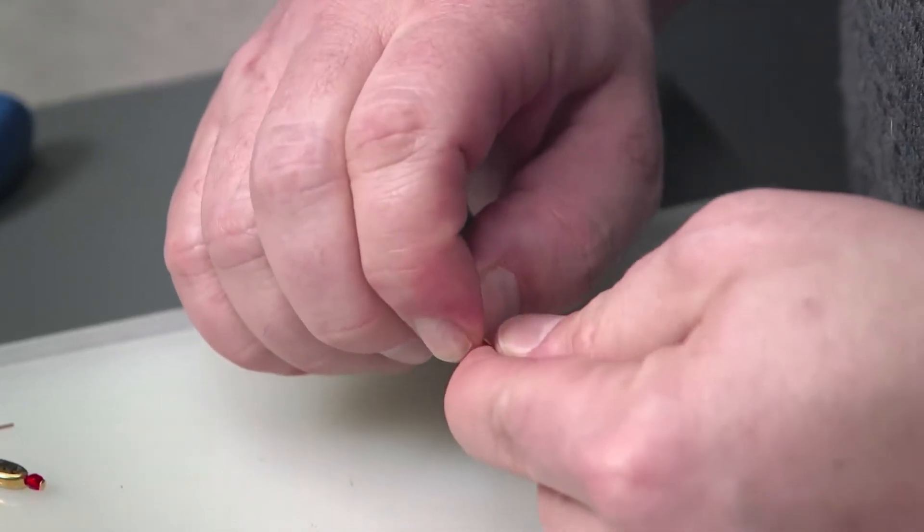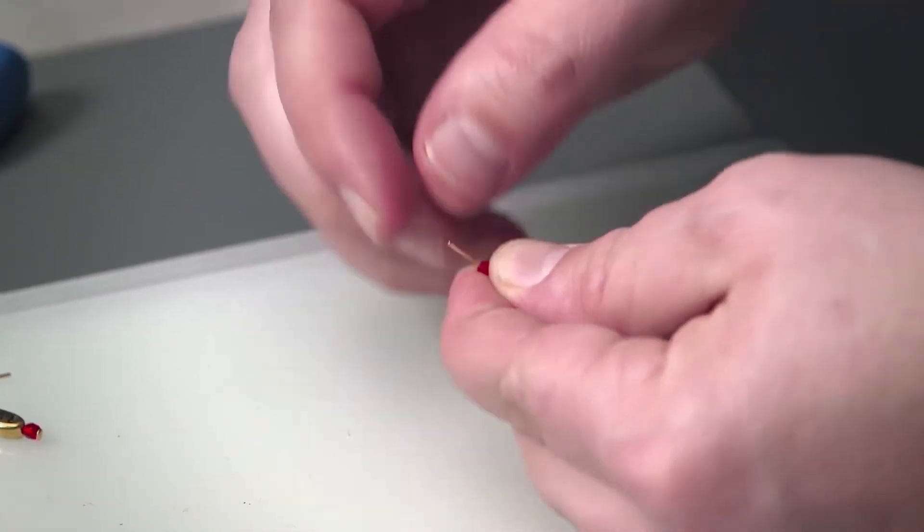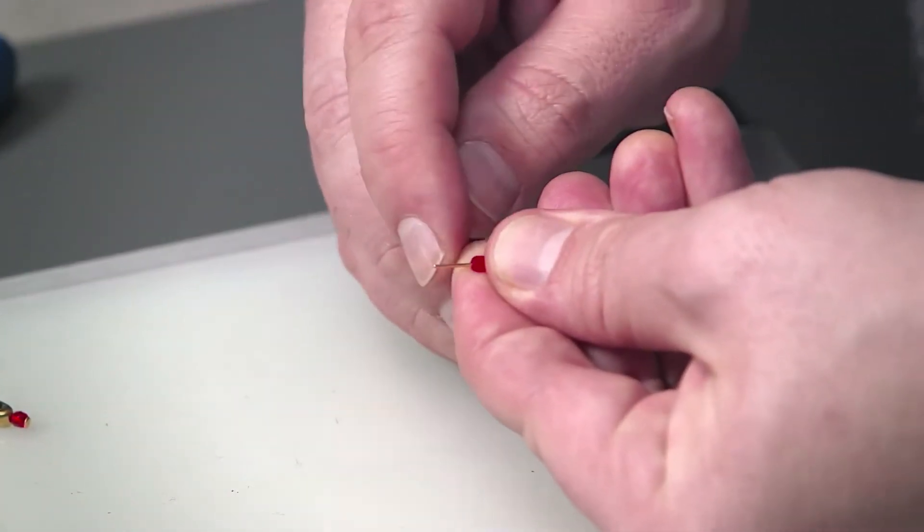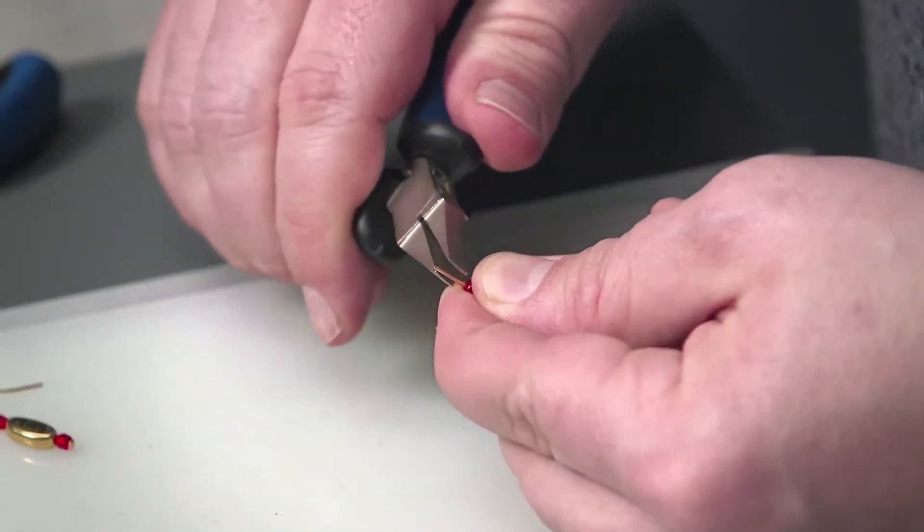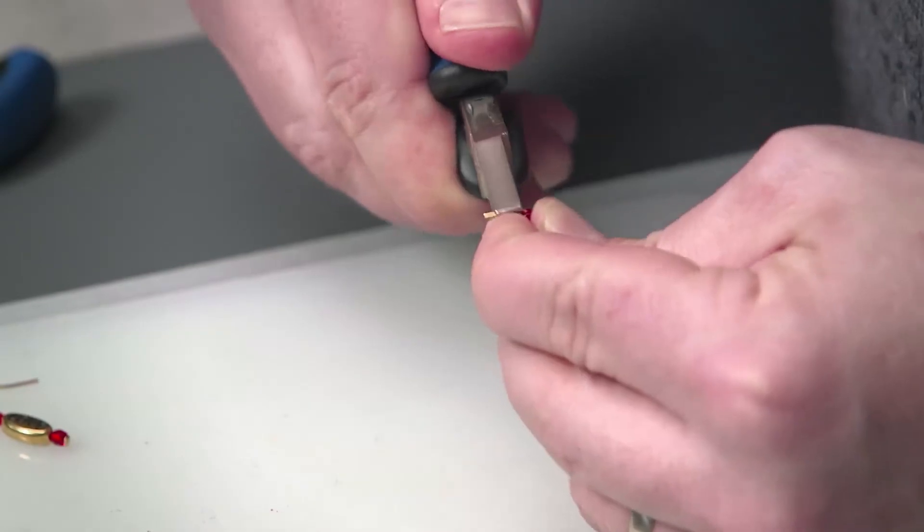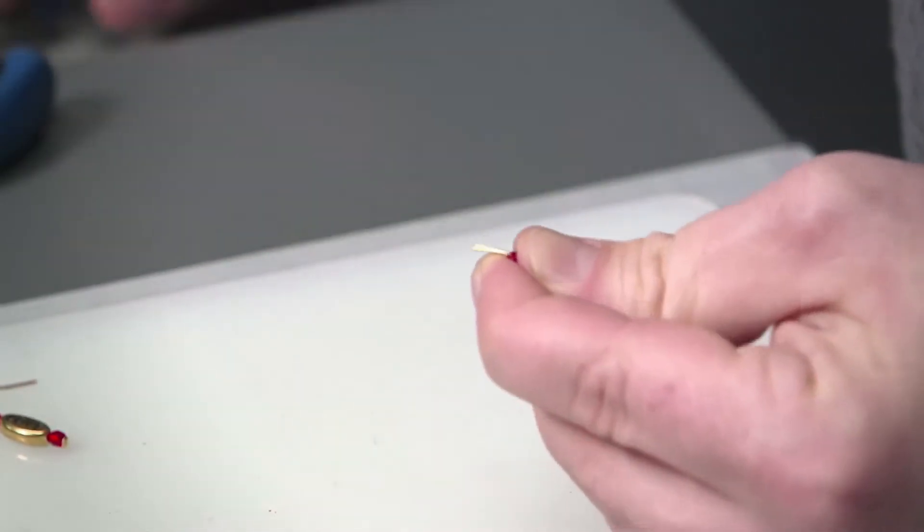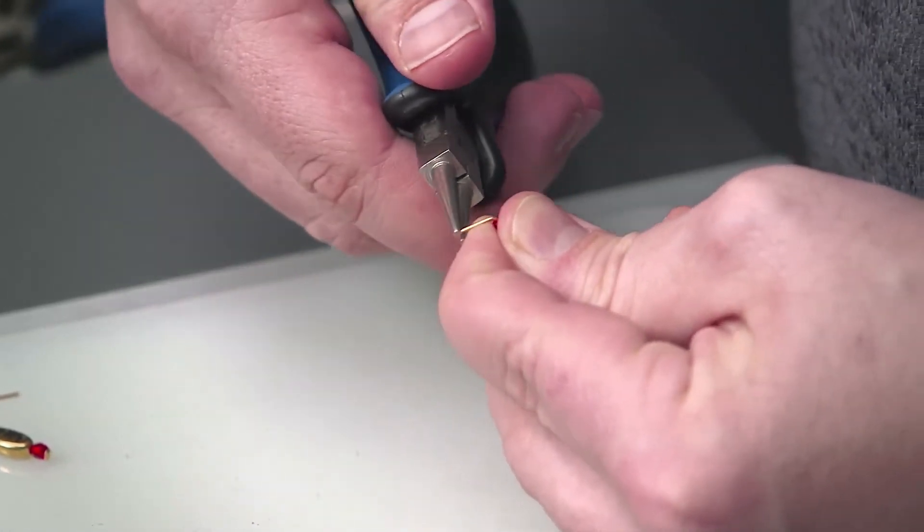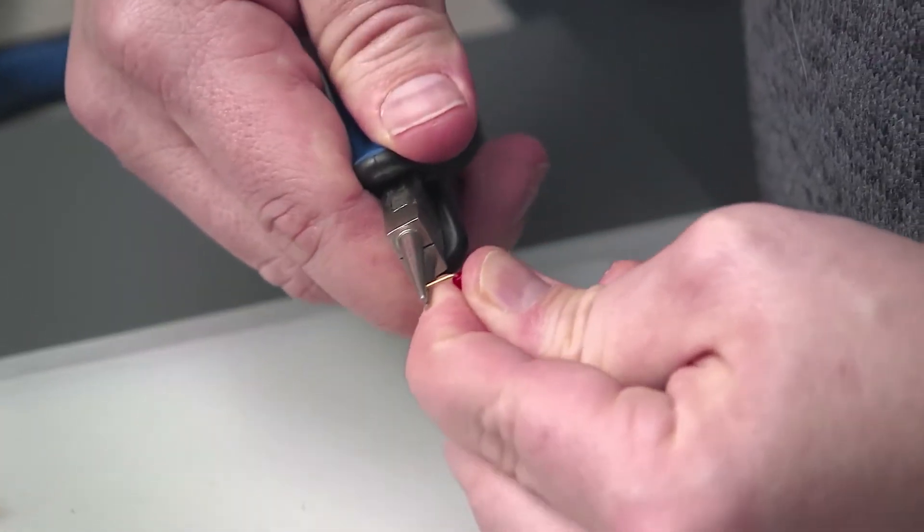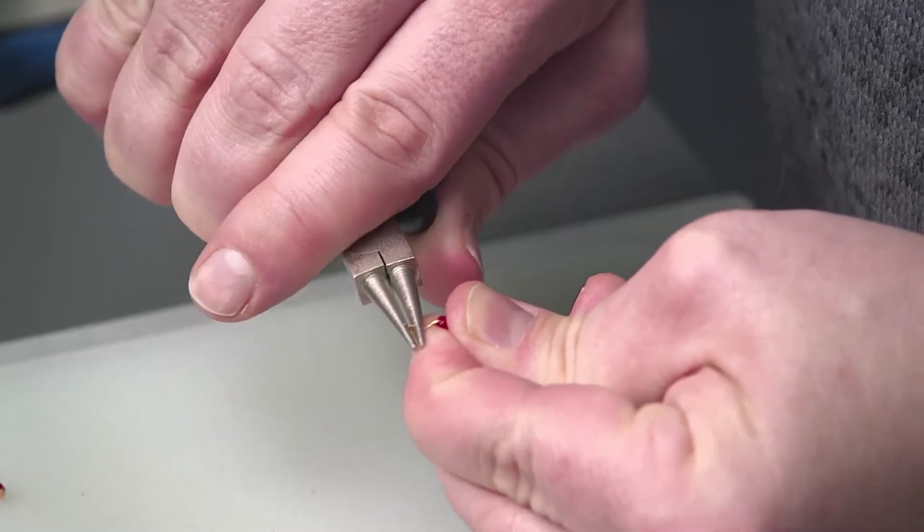Now we're just going to create a simple loop on the end here and we don't have a lot of excess so we actually don't even need to trim this. We'll just take our flat nose pliers, bend it at a 90 degree, grab our round nose pliers, and go ahead and twist it up.